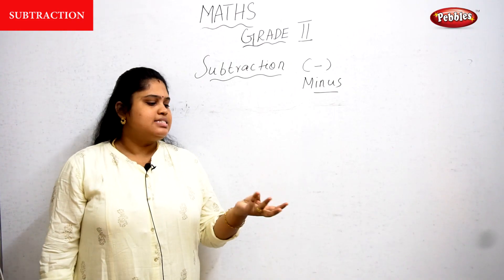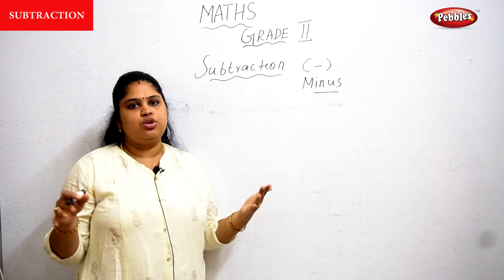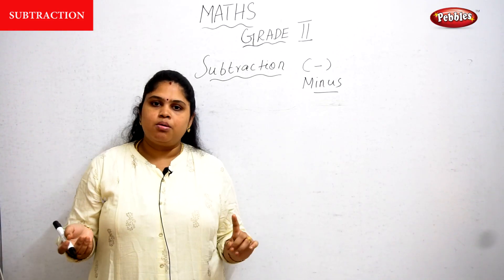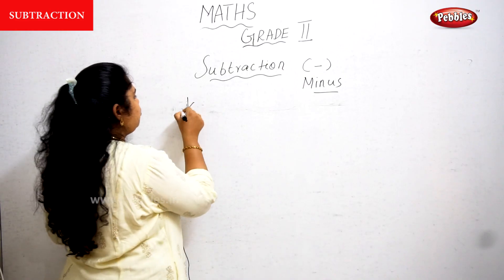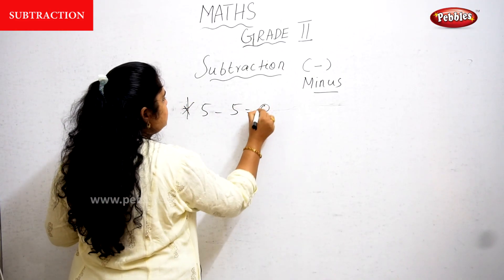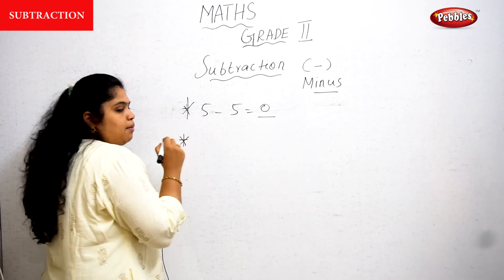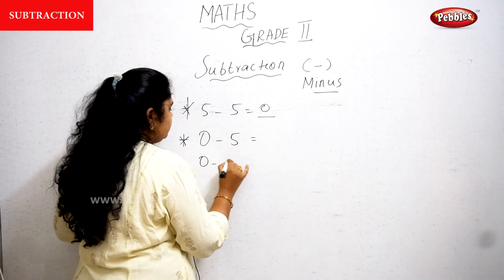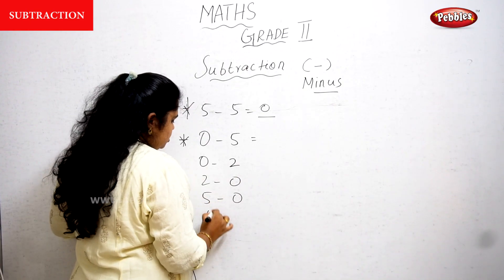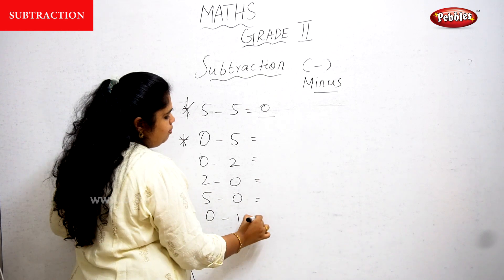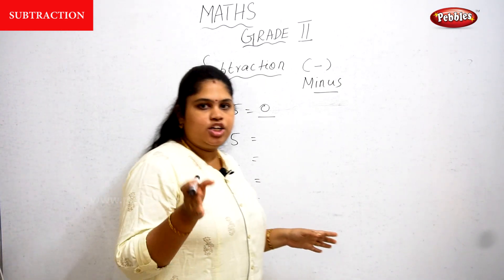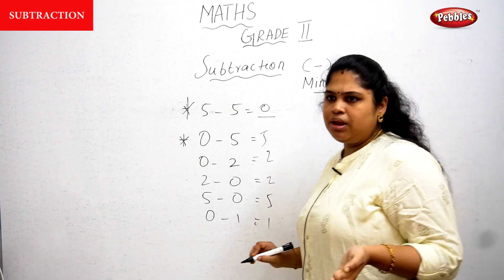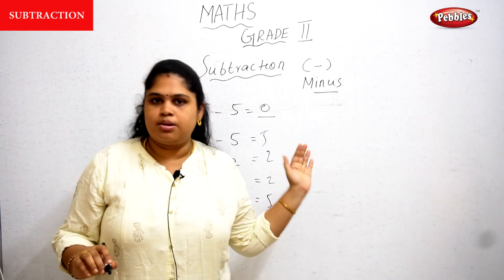Second point: if a number is subtracted with 0 — for example 5 minus 0, 2 minus 0 — the same number will be the answer, just like in addition. So there is no change in this step for either addition or subtraction when 0 is involved.